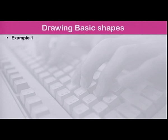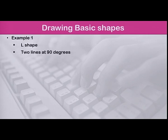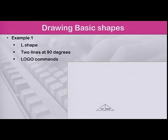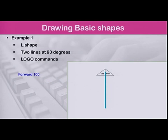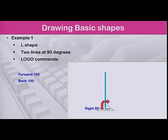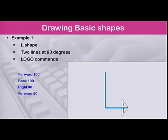Drawing basic or simple shapes in Logo is quite easy. To draw the L shape, we need two lines at 90 degrees to each other. Watch the following animation that shows the commands we need to type. Forward 100 draws a line. We go back 100 to the starting point. Turn the turtle right at 90 degrees. And finally, forward 50 to draw the second line.